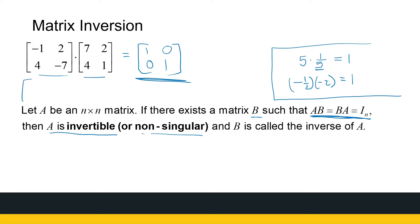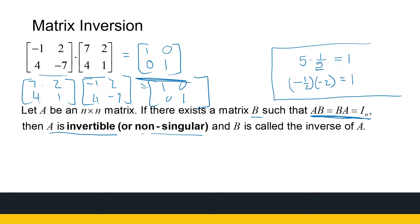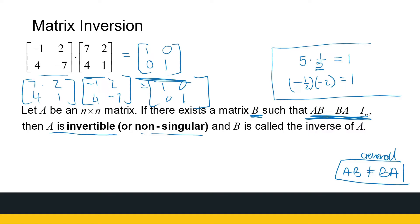For this example, the matrix 7, 2, 4, 1 — if I swap the order to minus 1, 2, 4, minus 7 — I also get the identity matrix. Now just remember that matrix multiplication is not necessarily commutative, so AB and BA are not necessarily equal in general. But in this special case, we've got the inverse coming out. So if I can find this matrix B, then I say A is invertible.